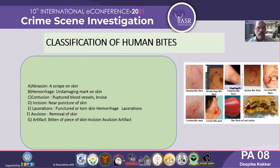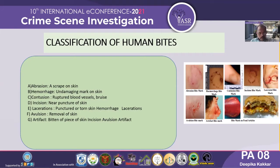Classification of human bite marks includes many categories. One is abrasion — a scrape on the skin. Next is hemorrhage — an undamaging mark on the skin. Contusion occurs when there is a rupture of blood vessels or any kind of bruise. Incision is similar to a puncturing of the skin. Laceration is total puncturing or tearing of the skin. Evulsion is the complete removal of the skin. Artifacts are bitten-off pieces of skin — incision or evulsion artifacts.